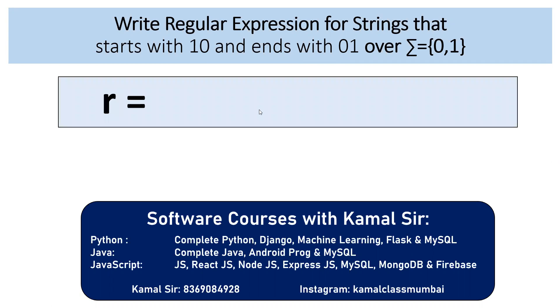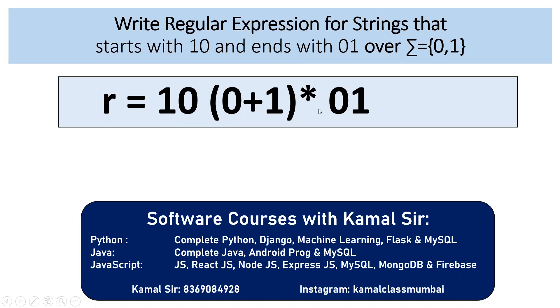We will start writing: starting with 10, which may have any combination of 0 or 1 in the middle, followed by ending with 01. But we will also add another case, that is 101. Now why?